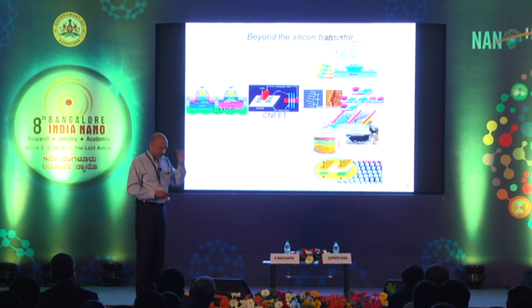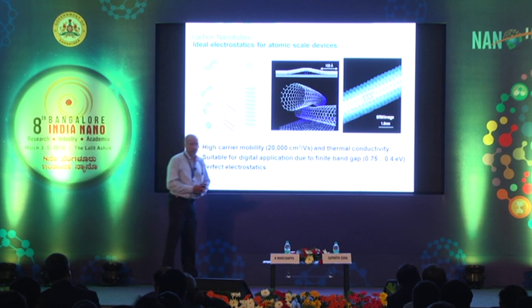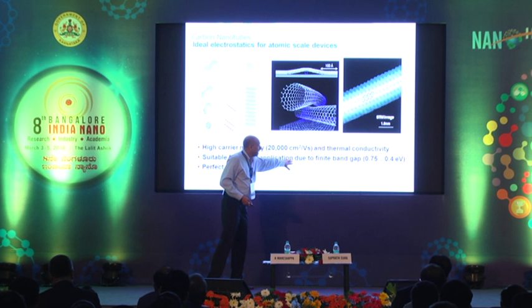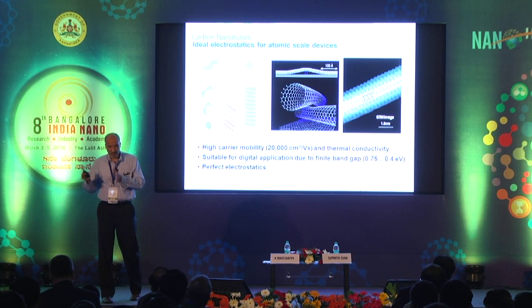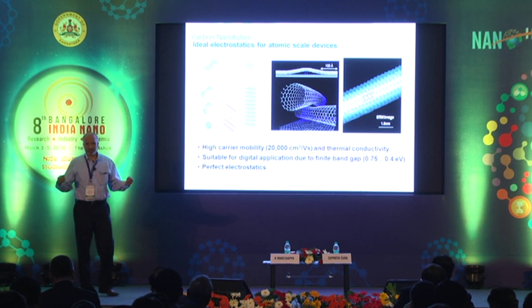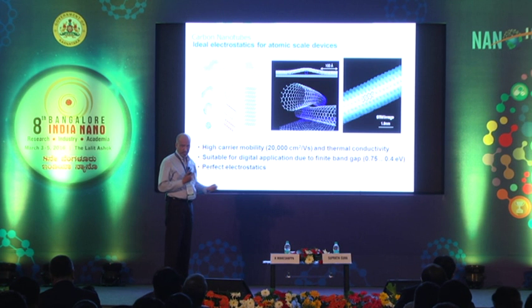There are three reasons why carbon nanotubes are exciting. One is that they have a very high mobility — 20,000 centimeters squared per volt-second. Their band gap can be tuned down to 0.3 or 0.4 electron volts, so they're compatible with low-voltage operation. And number three, and one of the most important reasons, is that because it is a one-dimensional structure, it has perfect electrostatics for making a very, very small transistor. Carbon electronics is made for one-dimensional, nanoscale transistors — which silicon is not.